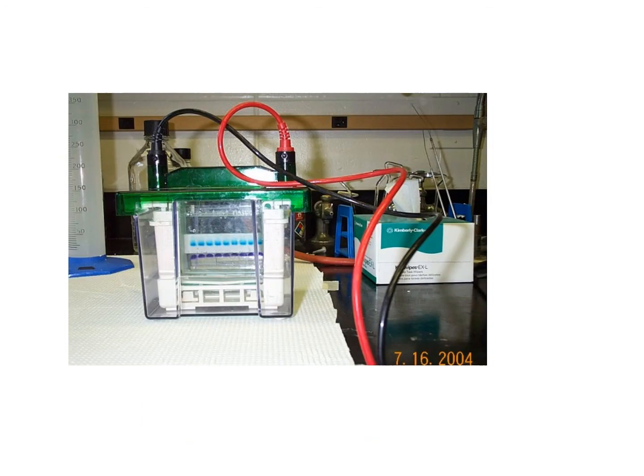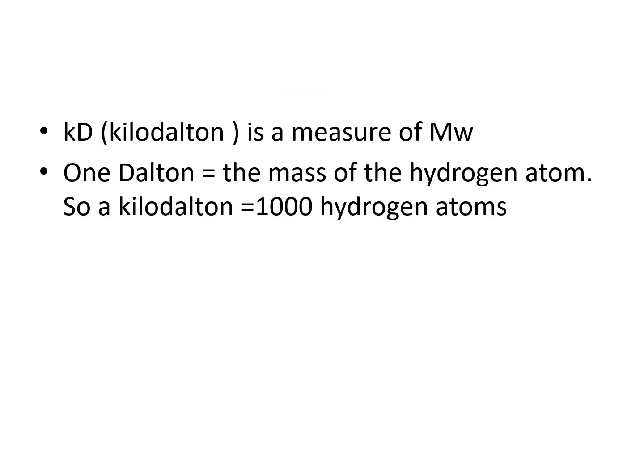This is the apparatus for SDS-PAGE. Here you can see the protein bands running in the gel, and the buffer filled around it. The molecular weight of protein is always measured in kilodaltons. One dalton is the mass of a hydrogen atom, so one kilodalton equals the mass of 1000 hydrogen atoms.